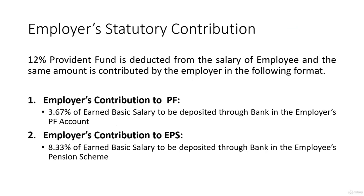The next deduction is the employer statutory contribution. In this, a total of 12% of PF is deducted from the employee's salary, and the same amount is contributed by the employer. The employer contributes 3.67% to PF and 8.33% to EPF of the employee's earned basic salary, making a total employer contribution of 12%.